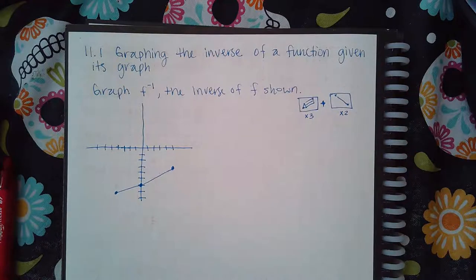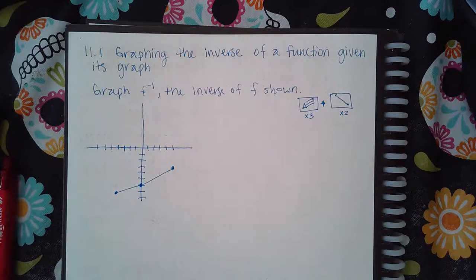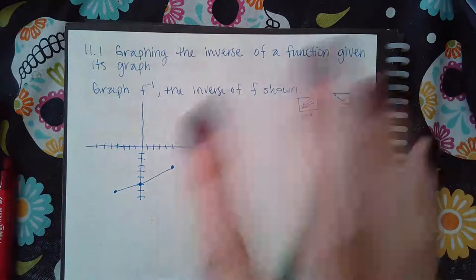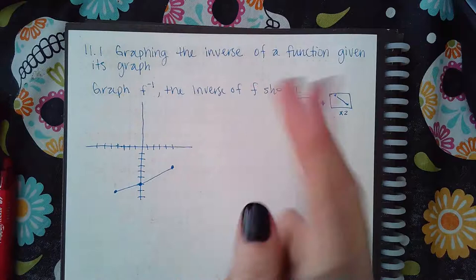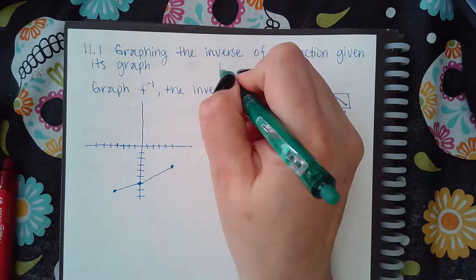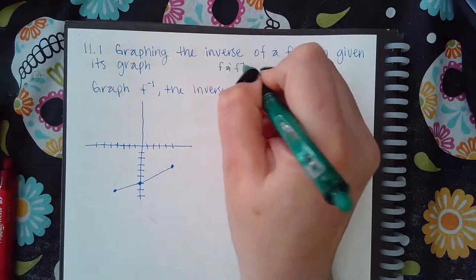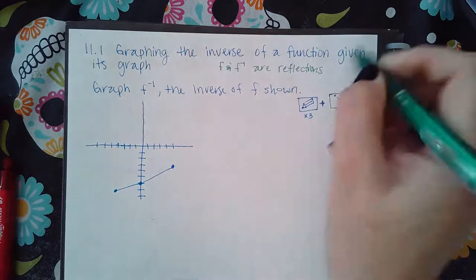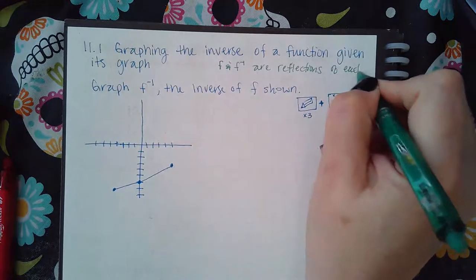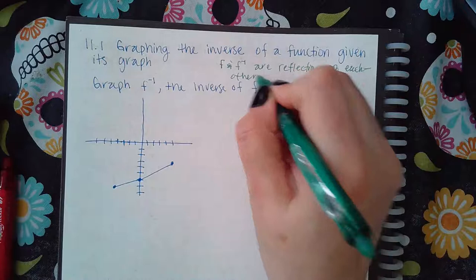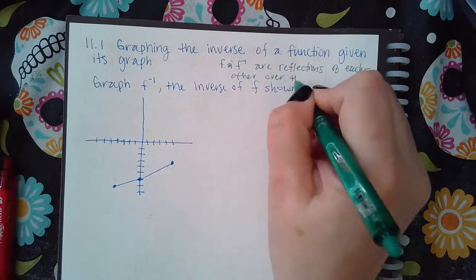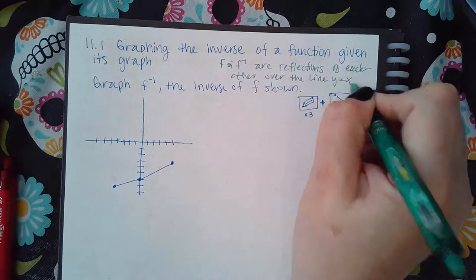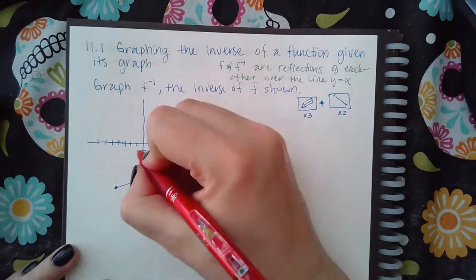Here we have 11.1 — Graphing the Inverse of a Function Given Its Graph. Another property of inverses is that we already know their points are swapped from each other, but we also need to know that f and f-inverse are reflections of each other over the line y equals x.